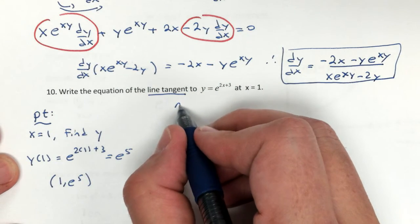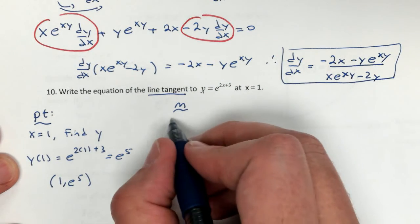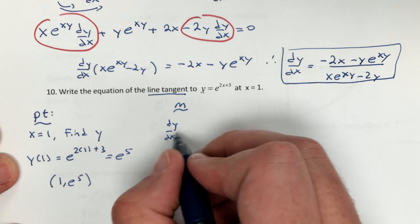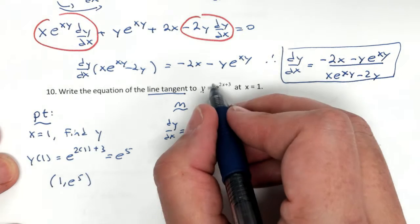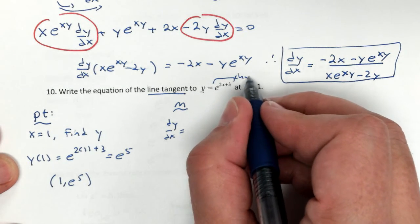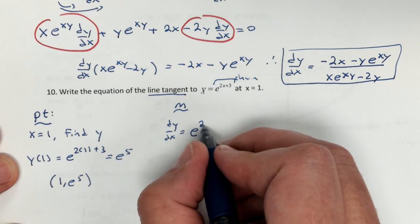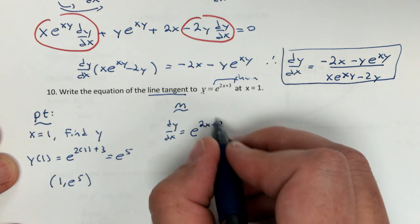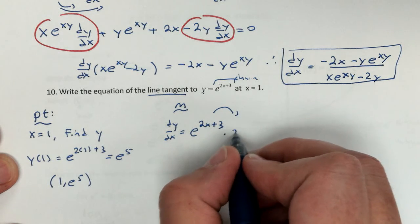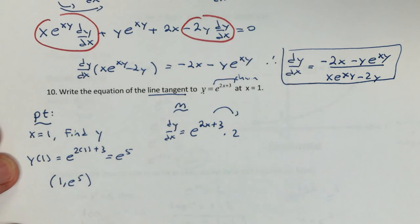Now we have to get our slope. To do that, we need our derivative, dy dx. Be careful when you take the derivative. There is a chain rule here. We're going to get e to the 2x plus 3. Don't forget, chain rule, times 2. There's my derivative.